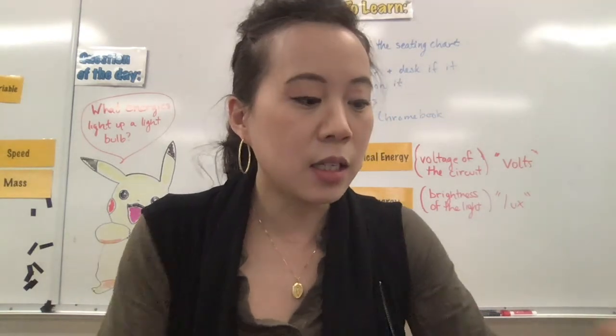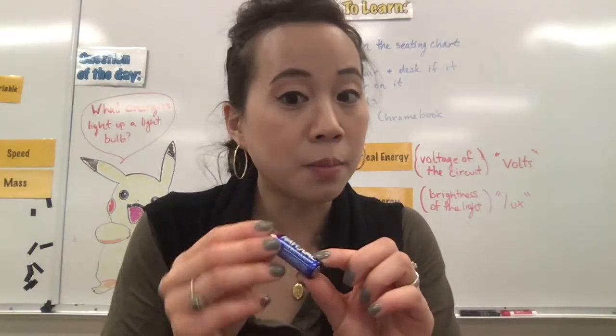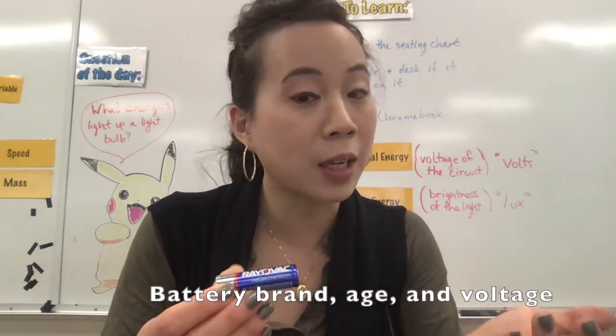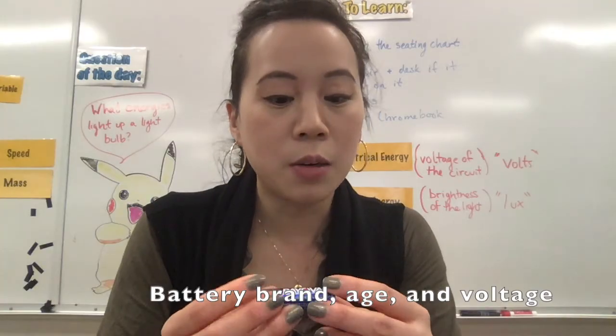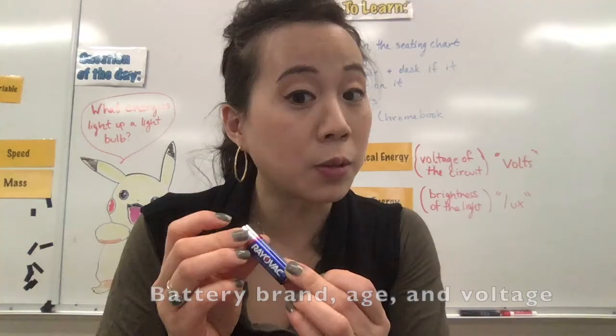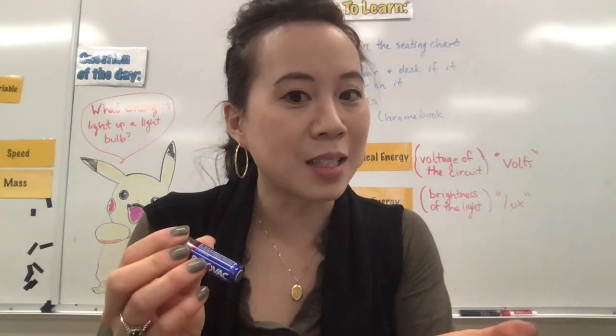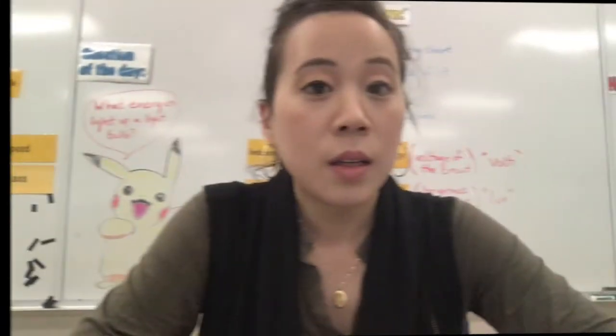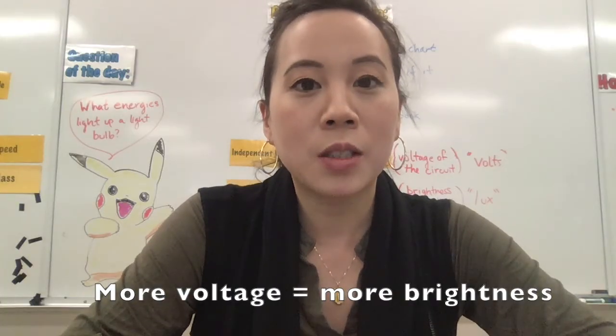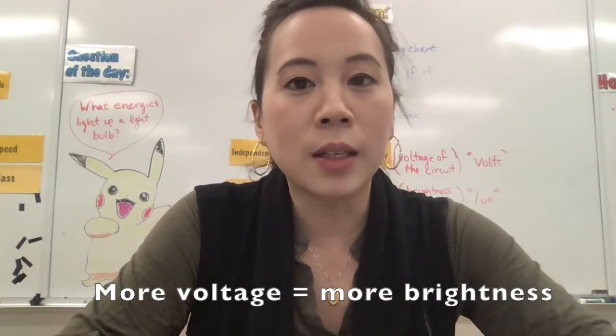And then lastly, each individual battery has a certain brand and it's a certain age so it depends how much of the chemical energy was used. And also, the voltage of each battery is 1.5 volts, which contributes to the success of your experiment. The result of the lab shows that as you add more voltage to the circuit, the brightness of the light increases.